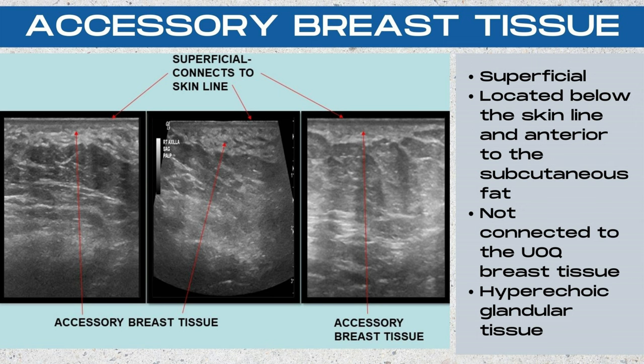Here are three ultrasound images demonstrating the appearance of accessory breast tissue. This is going to be hyperechoic glandular tissue — a patch of tissue that's off by itself. It is not going to be contiguous with or connected to the upper outer quadrant breast tissue. It's going to be located very superficially on the ultrasound image, just below the skin line and anterior to the subcutaneous fat layer.